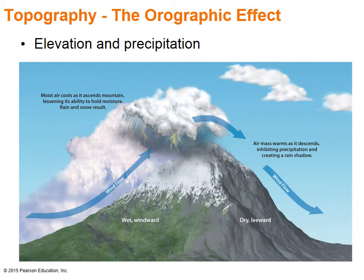This photo shows the orographic effect, where air rises up and over mountains to produce both wet and dry areas. As air rises up the windward side of the mountain, it produces rainfall and snow due to cooling temperatures at higher elevations, as cold air loses its ability to hold moisture. But once the air moves over the mountains, it begins to descend and warm up. Warm air has the ability to hold moisture, therefore leaving the leeward side dry. These dry areas are said to be in the rain shadow of the adjacent mountains.